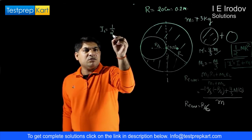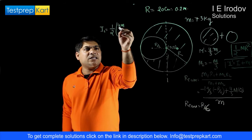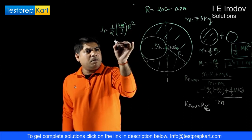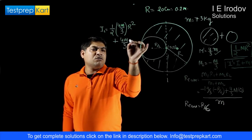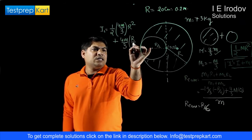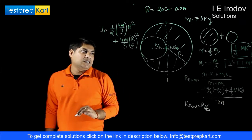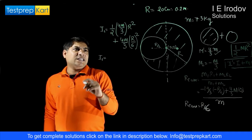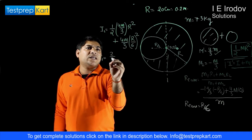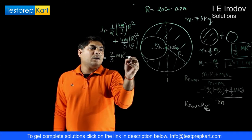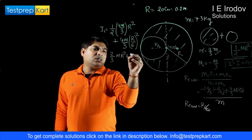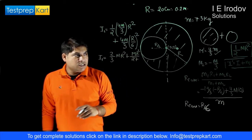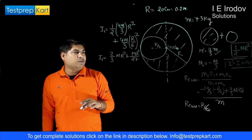For the first disc, I₁ equals ½ × (4m/3) × r² plus (4m/3) × (r/6)², applying the parallel axis theorem. Simplifying this expression gives 2/3 mr² plus mr²/27.